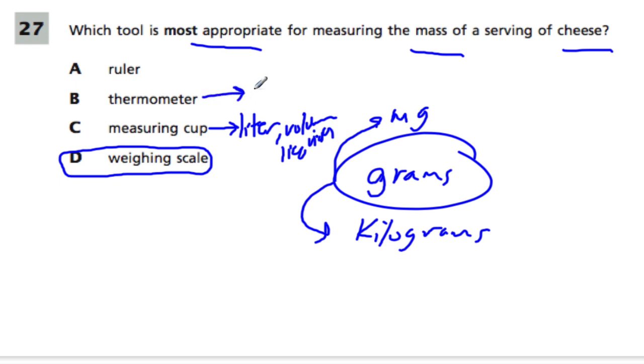A thermometer deals with temperature, so this is a measurement of heat. A ruler is a measurement of distance or length.